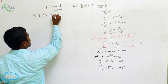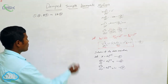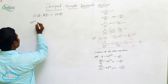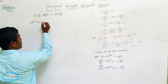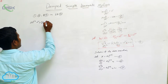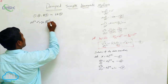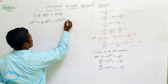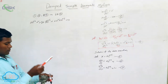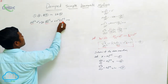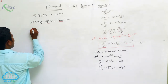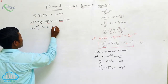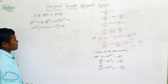So the first term is A·e^(αt)·α², next plus 2b into A·e^(αt)·α, next plus ω² into A·e^(αt) equals zero. Which term is common here? A·e^(αt) is common in all terms, so we take that out: A·e^(αt) times (α² + 2bα + ω²) = 0.